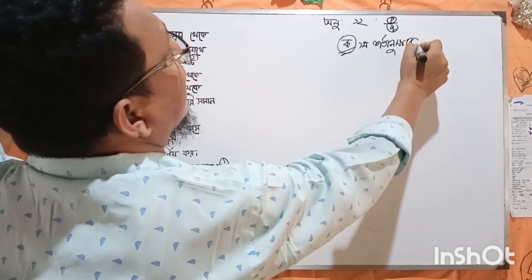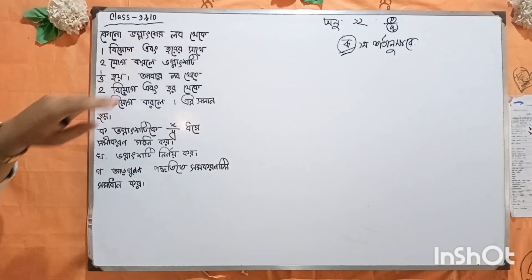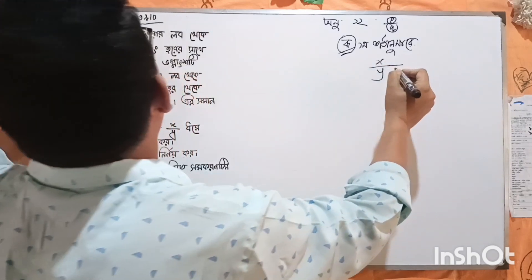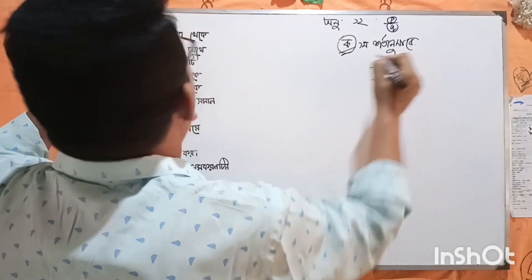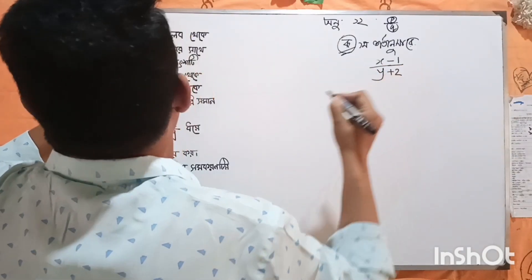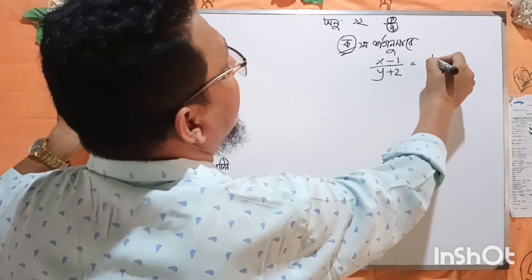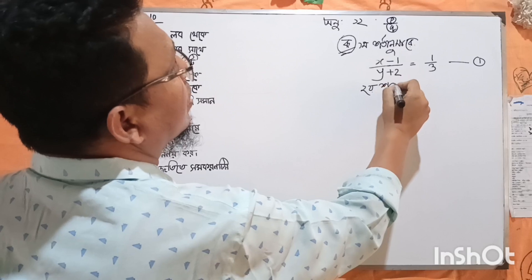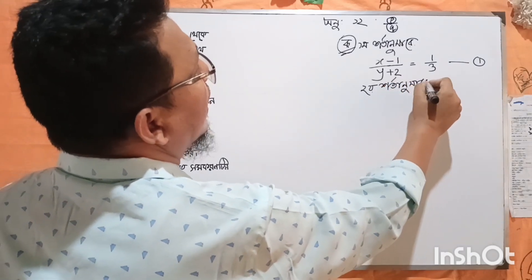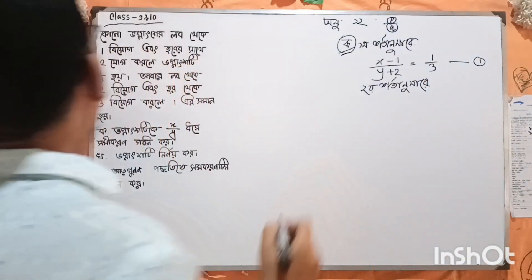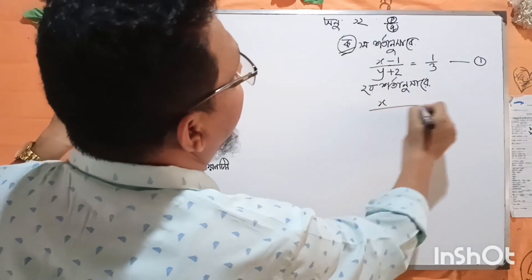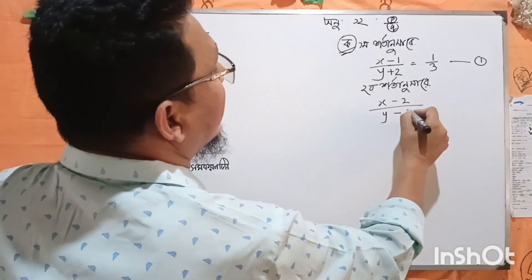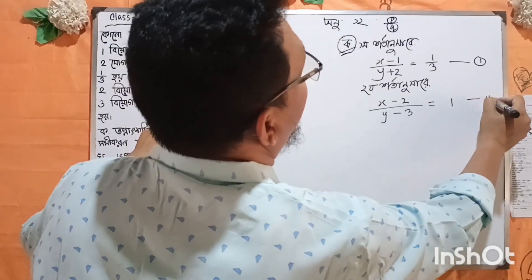The first condition states: subtraction is applied — one subtraction and one addition — giving us a fraction. That fraction equals 1 by 3. This becomes condition one. Now the second condition: the second condition states — look at what it says — we apply subtraction again in a different form.